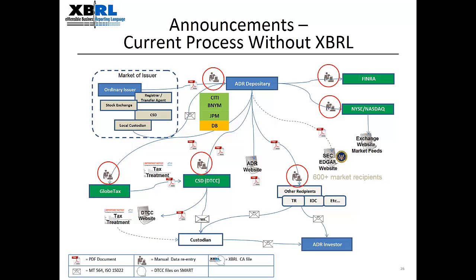At DTCC, we receive the announcement via email from one of the four issuer banks. After opening and analyzing the PDF attachment, the operator manually enters the announcement information into the DTCC system. Each depository bank has its own format for their PDF, so there is no standardization. Once the information is entered, it hits the DTCC participant terminal system, or PTS, and is reported in end-of-day files. The risks are clear: key data could be overlooked, keystroke errors can occur, and there is a time lag as the email itself could be misdirected. XBRL offers the opportunity for risk reduction via automation and standardization.